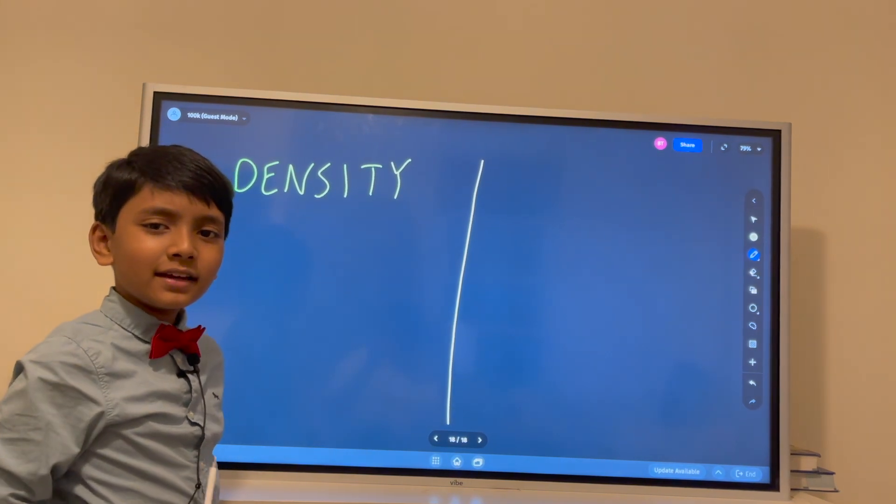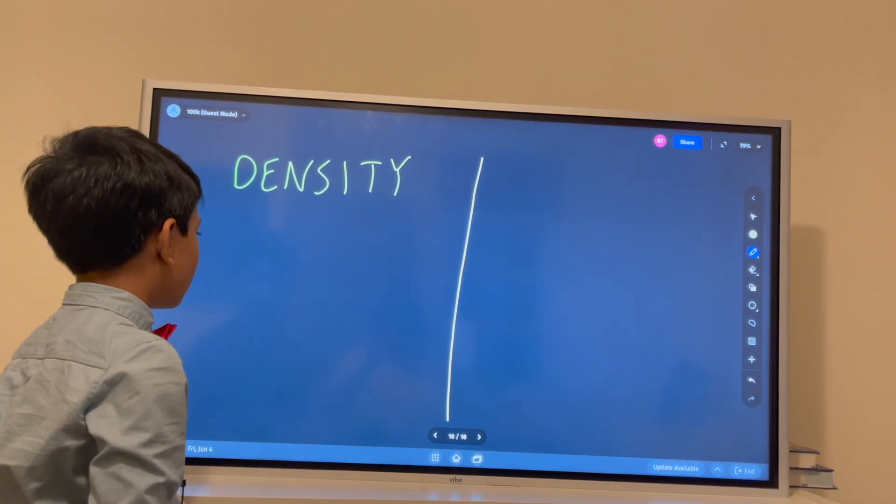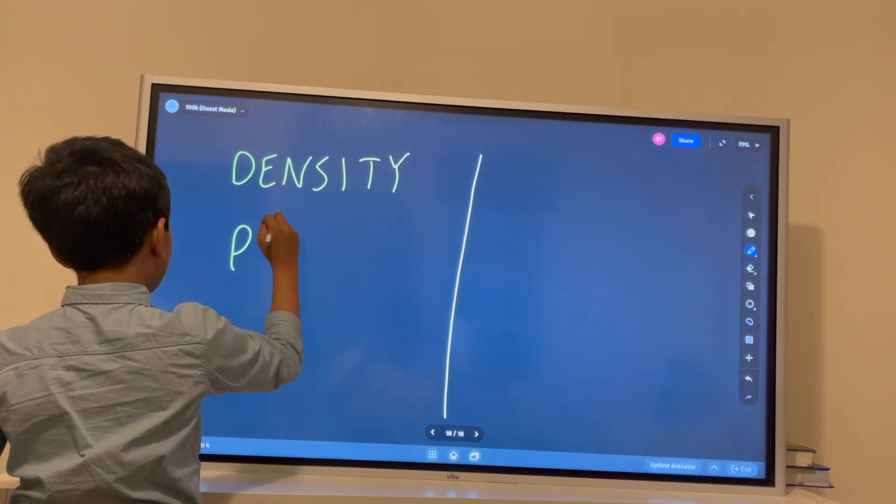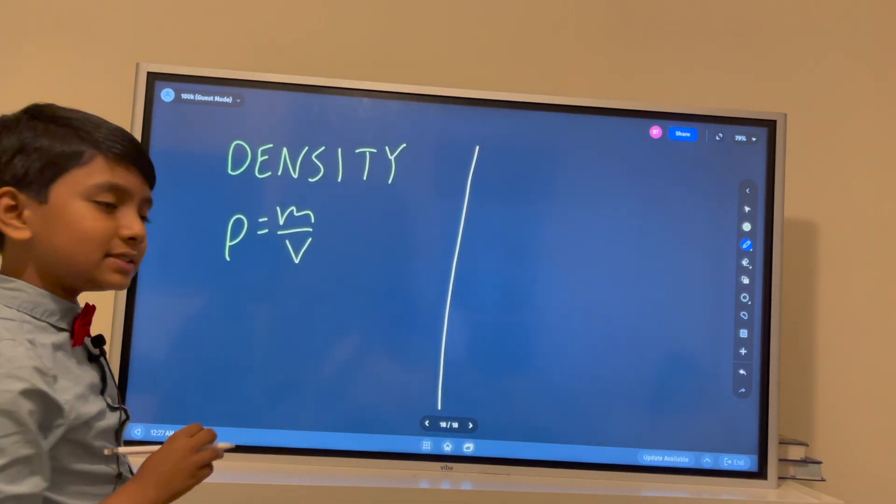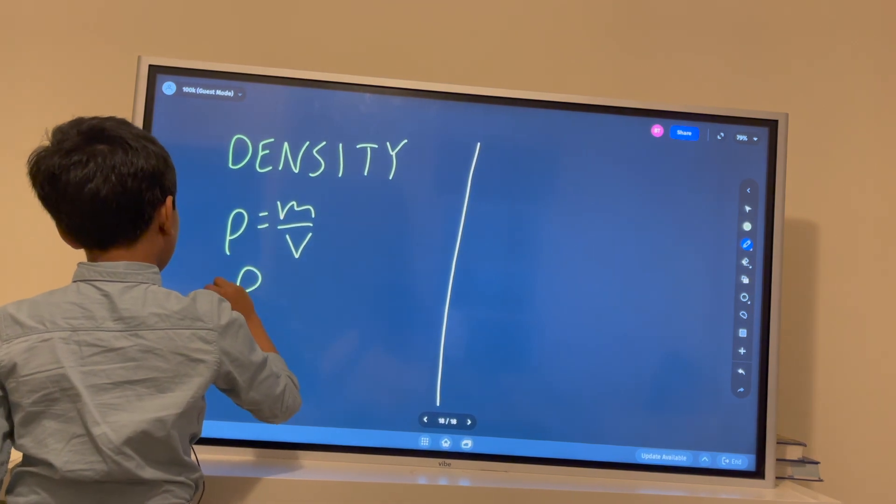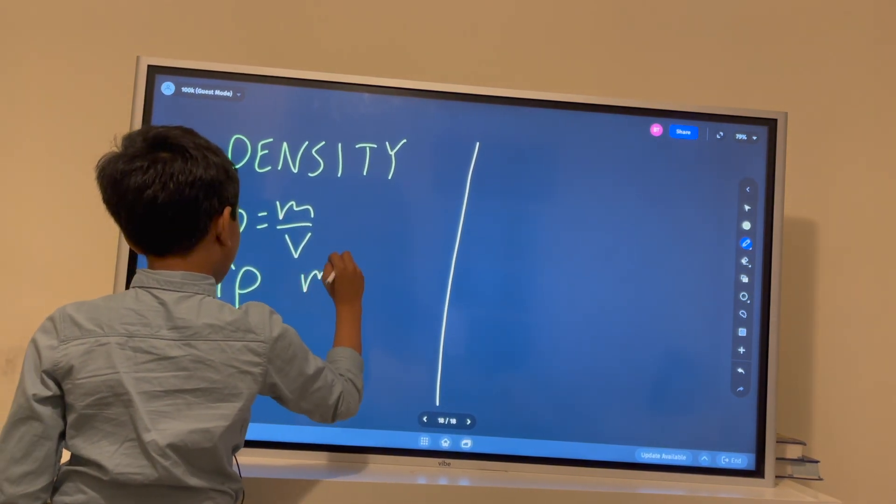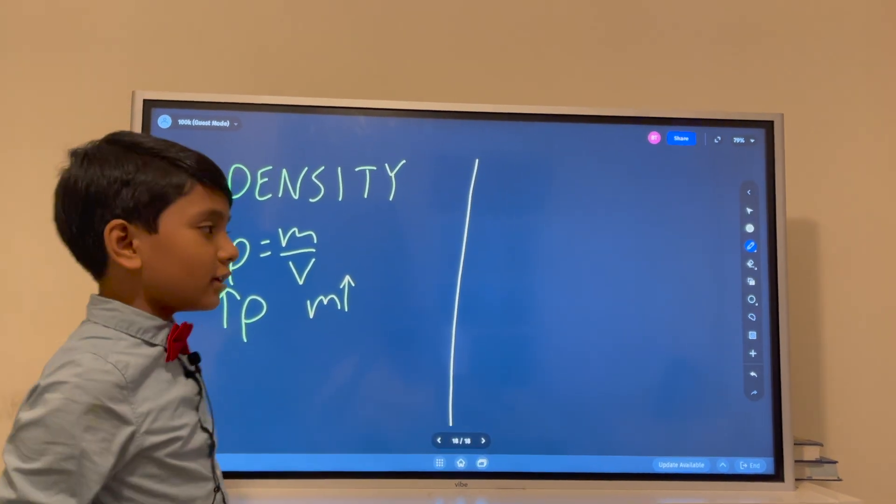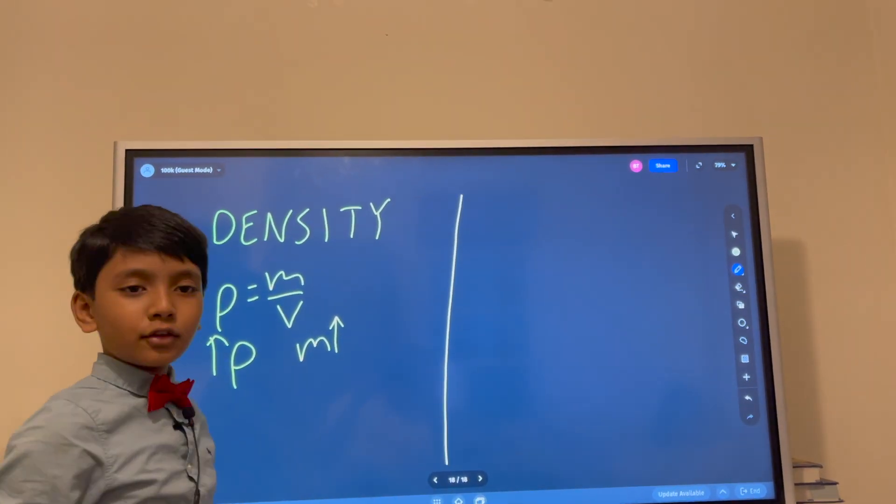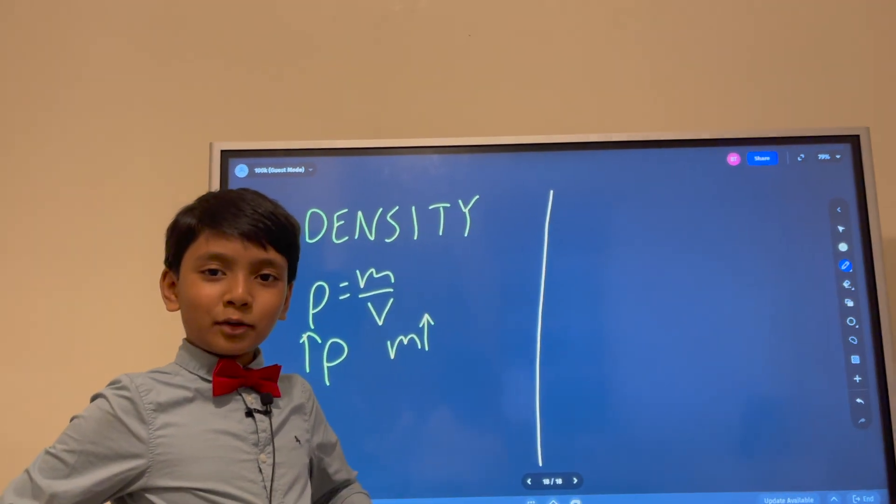And density, how would that affect something? Well, density, as you know, is mass over volume. So, as density increases, mass is there to increase. Think of it this way. Let's say that your density increases. That means your mass increases.